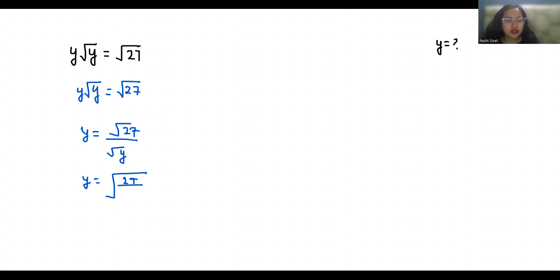Now if I do squaring both sides, the square and the square root cancel out. So y squared equals 27 by y. It becomes y squared times y equals 27.